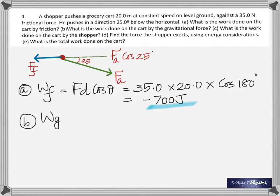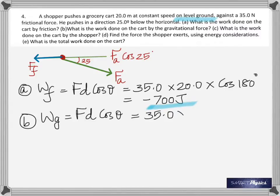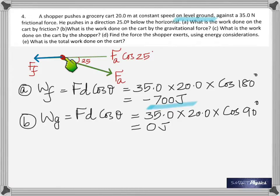Part b: what is the work done on the cart by the gravitational force? He's moving the cart on level ground — not taking it up — so the angle between displacement and gravity is 90°. Cos90° = 0, so no work is done by gravity. If an object doesn't move against gravity, no work is done.